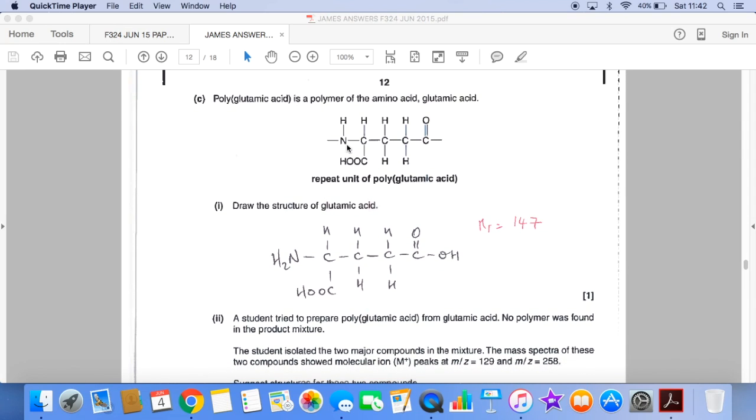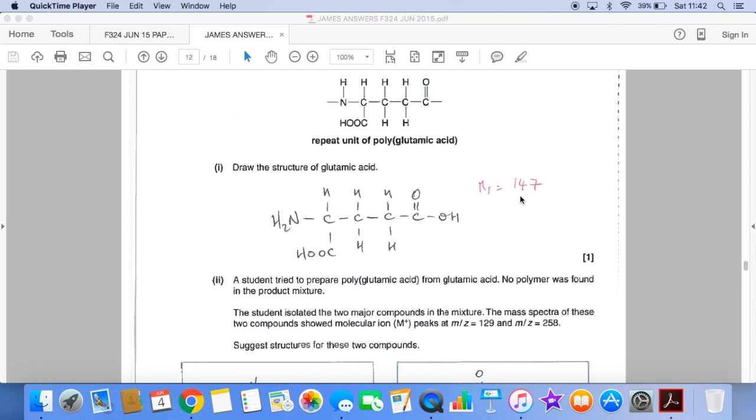Polyglutamic acid now. So if this is the repeat unit, we've got to turn it back into the glutamic acid structure. We're just going to add water onto this, so we add an H on this end and an OH on this end. You can see I've written up there the MR of this is 147. That's going to be very helpful when we work out the structures of these molecules that are formed. Remember, they're not polymers. So the fact that this first one has an MR or M plus peak at 129 is telling us that going from this to this we've lost an H2O molecule.